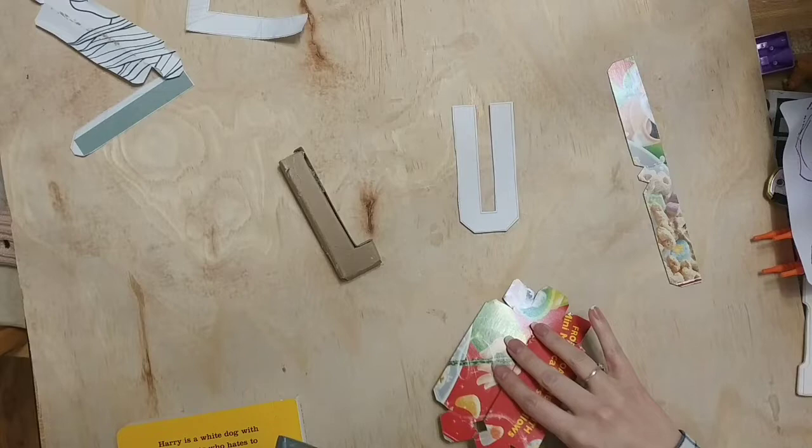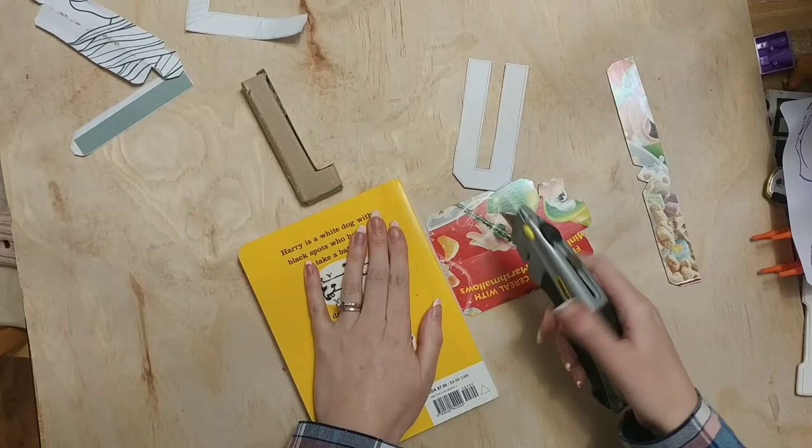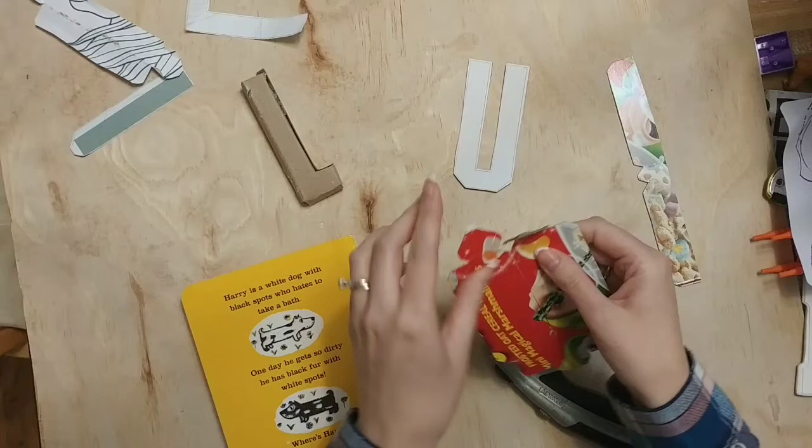So another thing I did to help me with folding was to score the box with a box cutter. So I wasn't cutting all the way through—I was just gently scoring it and then that would help me bend the pieces.